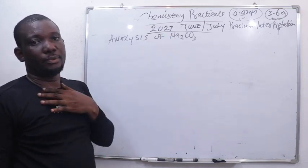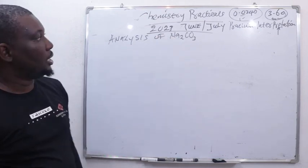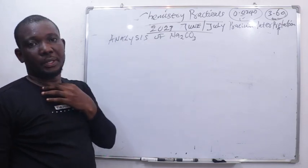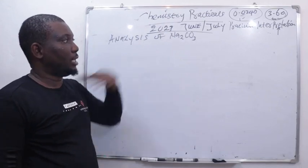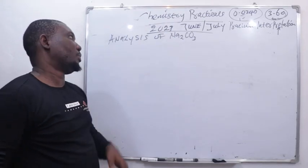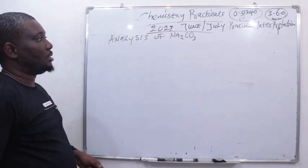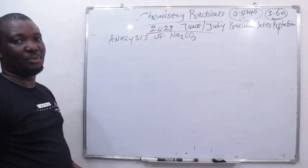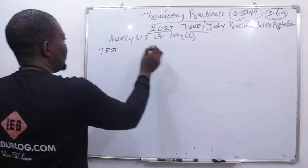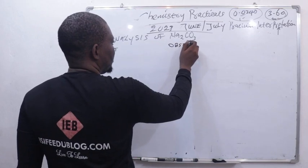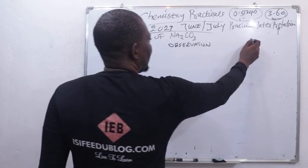We will look at insolubility, the effects of solution of these salts with litmus paper, then we test for carbonate ion, and we test for carbon dioxide. All this analysis must be represented in a tabular form under the headings: tests, observation, and inference.